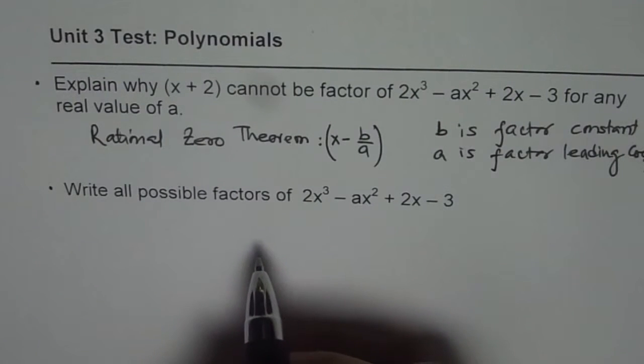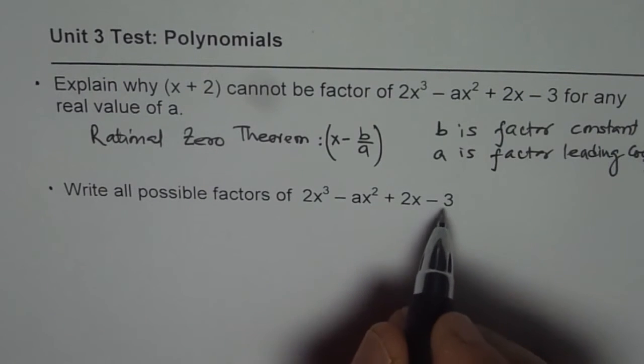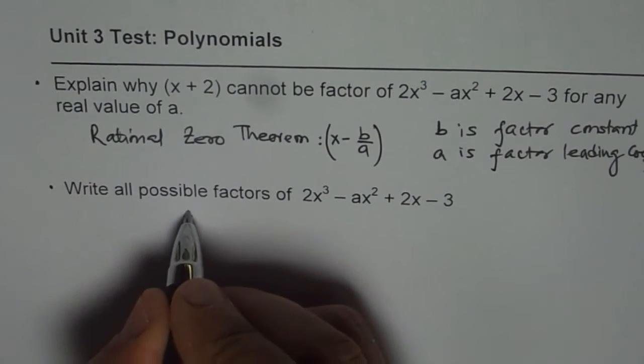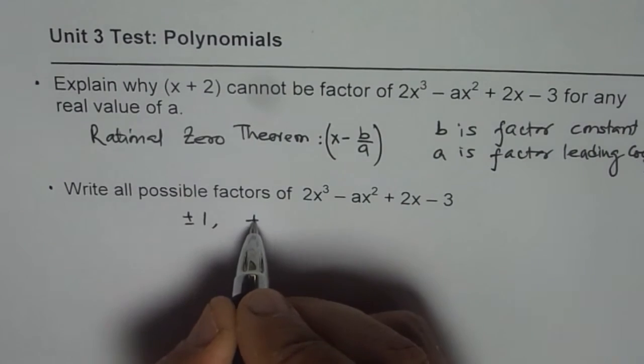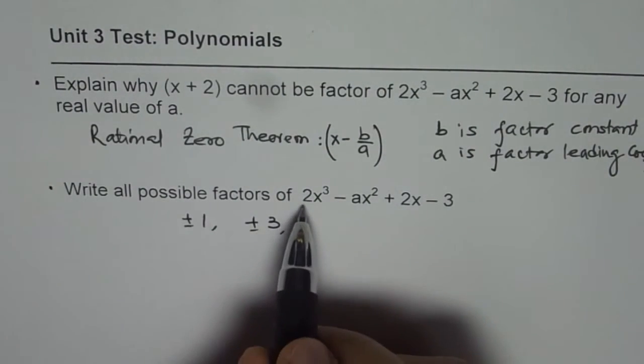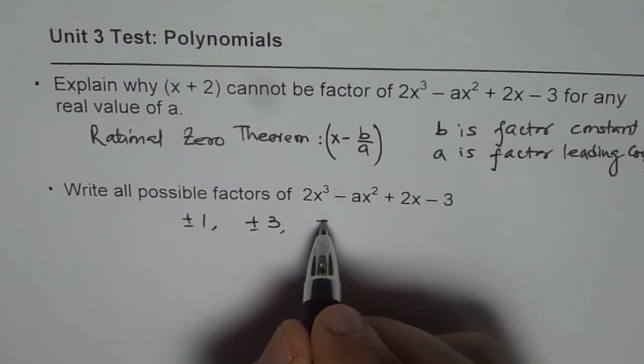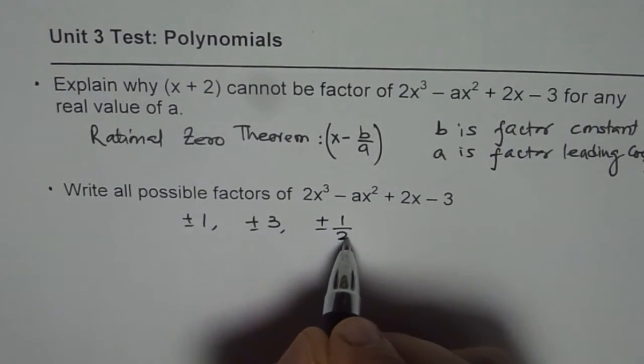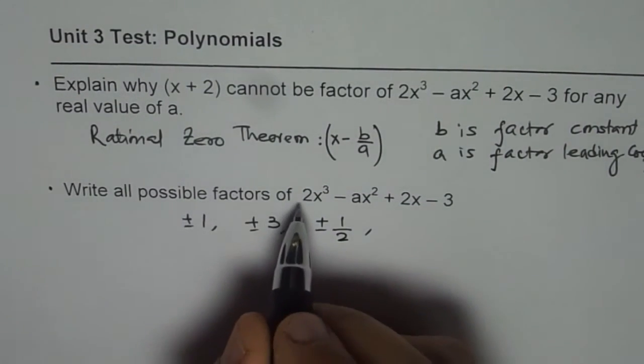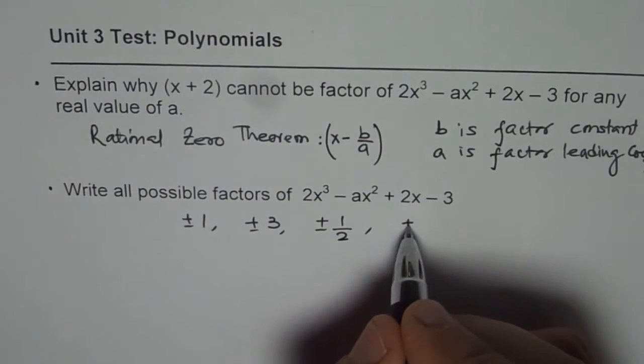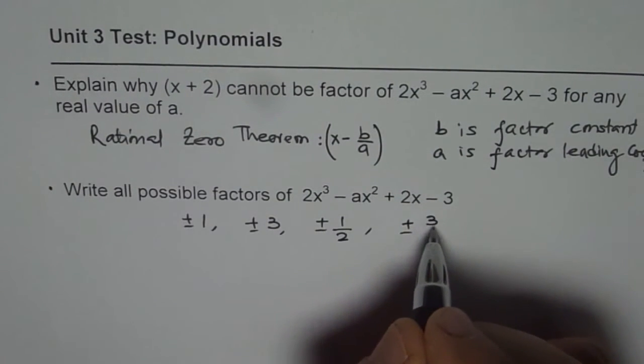So the possible factors here will have the integers as the factors of 3, which is plus minus 1 or plus minus 3, which means factors of 2 is 1. Or it could be plus minus 1 over 2, dividing by factors of leading coefficient plus minus 3 over 2.